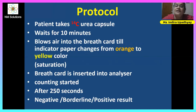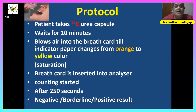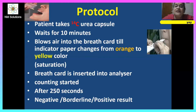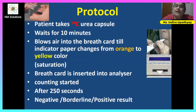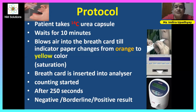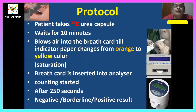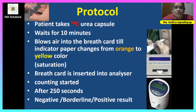The protocol: the patient takes the 14-carbon urea capsule, waits for 10 minutes, and blows air into the breath card until the indicator paper changes from orange to yellow, showing saturation — similar to a pH indicator paper. The breath card is inserted into the analyzer and counting begins. After 250 seconds, a result is given: less than 25 counts per minute is negative, 25 to 50 is borderline, and more than 50 is positive.